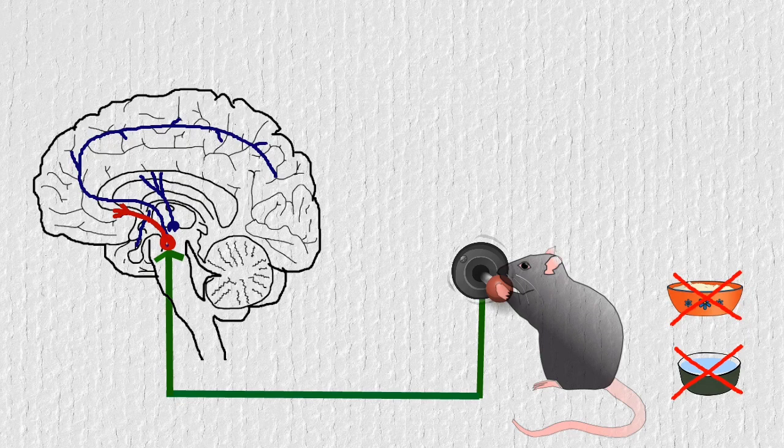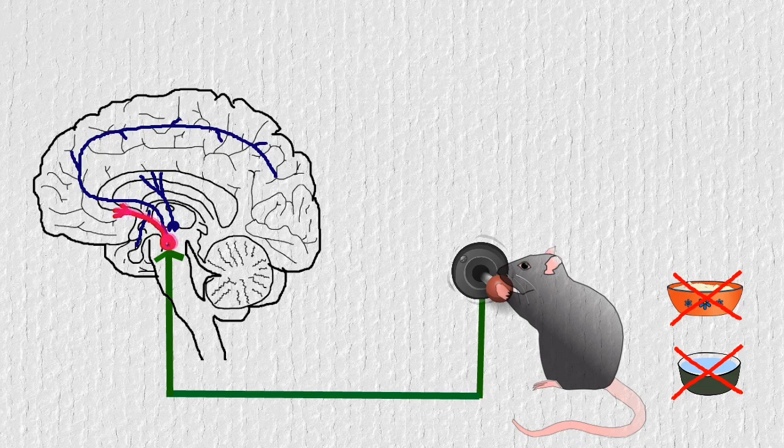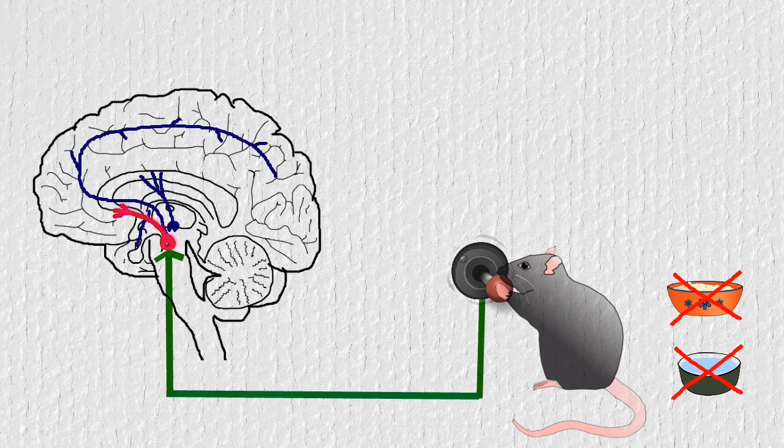They kind of couldn't ask the rat whether they really felt happy in that moment, but studies with humans showed that they had increased dopamine activity in this reward pathway whenever they experienced small good things that were supposed to give you pleasure.